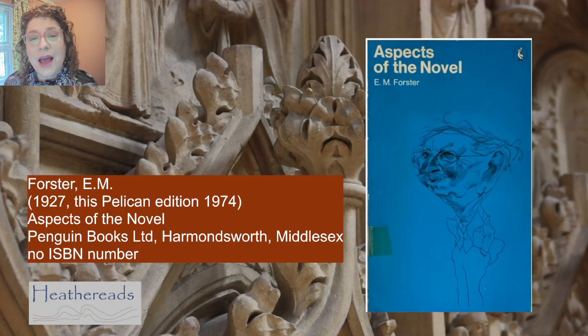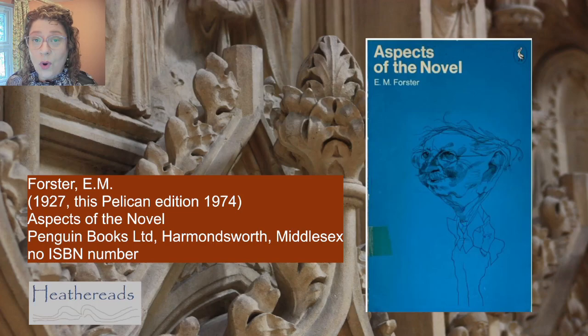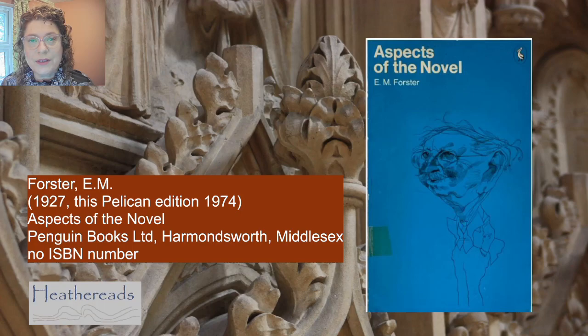The book we're going to look at today is Aspects of the Novel by E.M. Forster, first published in 1927. The Pelican edition that I got hold of actually came out in 1974, and of course Pelican is an imprint of Penguin — or was. And Penguin, as you know from so many videos I've already put out, seems to be my favourite publisher.